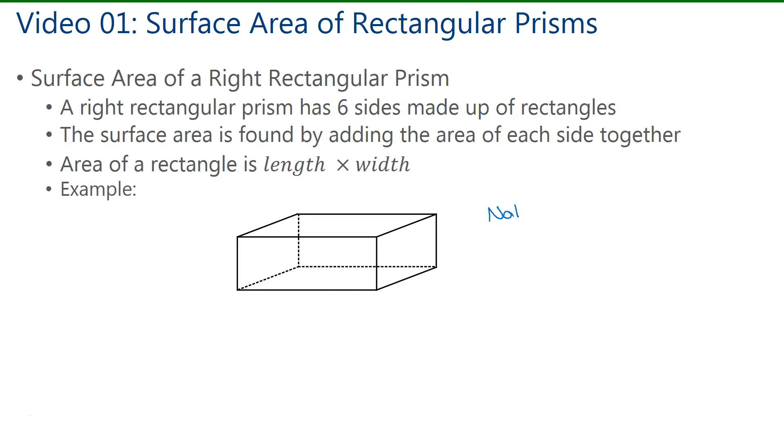Now looking at this diagram, I'll make a few notes. First of all, the area of the top and bottom rectangles are equal. So if we find the area of the top, or the area of the bottom, then we can just multiply it by two, since they're the same.